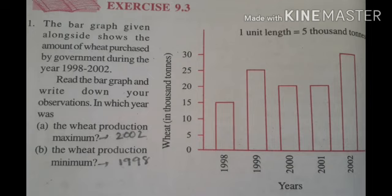Dear students, here on one side we have wheat in thousands of tons — 0, 5, 10, and so on. And on the other side we have the years: 1998, 1999, 2000, and so on. This is the base of the graph.